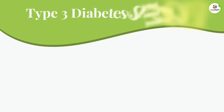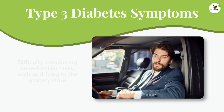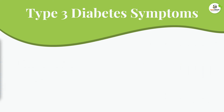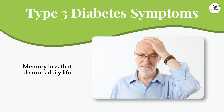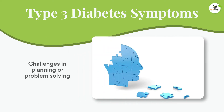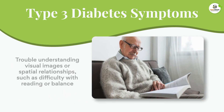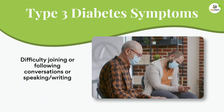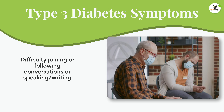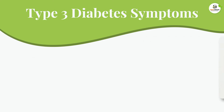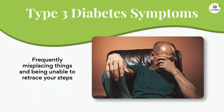The symptoms of Type 3 diabetes include difficulty completing once-familiar tasks such as driving to the grocery store, memory loss that disrupts daily life, challenges in planning or problem-solving, confusion with time or place, trouble understanding visual images or spatial relationships such as difficulty with reading or balance, and difficulty joining or following conversations or speaking and writing.